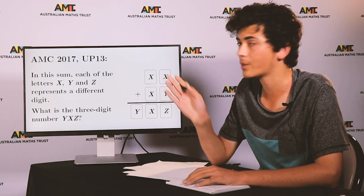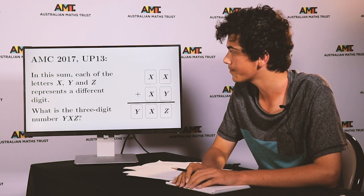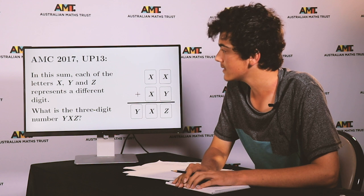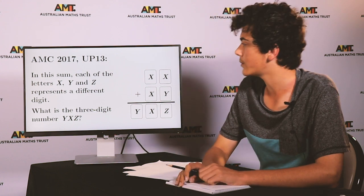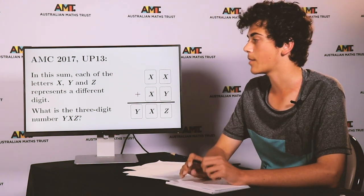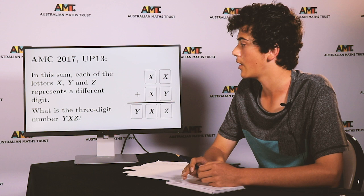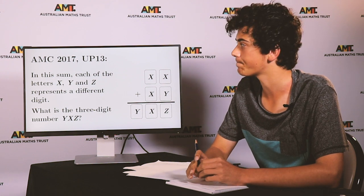The first one was an upper primary problem and it says: in this sum, each of the letters X, Y and Z represents a different digit. What is the three-digit number Y, X, Z?